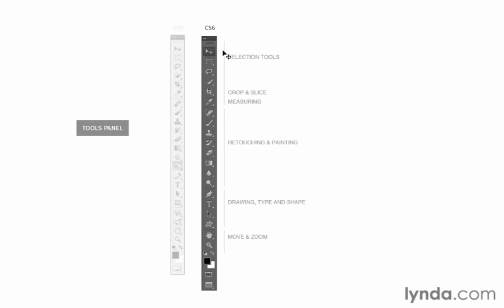Now on to deconstructing what we have here. You'll notice that there are these little dividing lines — these tools are grouped together intentionally. Up at the top we have our selection tools. One of the Photoshop mantras is 'select before you correct,' that's why these tools are located up near the top. We also have the ability to crop or to measure. Next, we have our retouching tools and painting tools, which give us the ability to heal, clone, paint, or erase and more. In the next group we have tools which allow us to draw, add type, or create custom shapes. And then finally down below, we have our move and zoom tools.